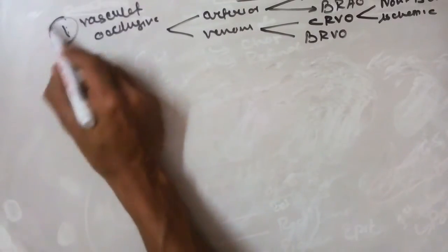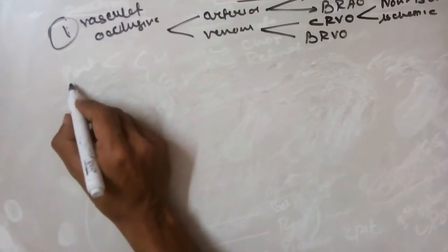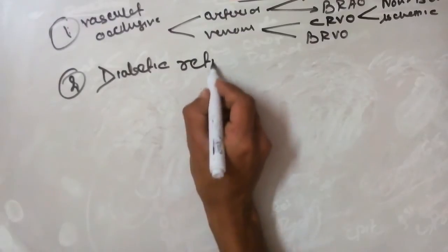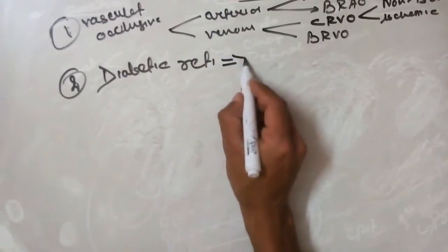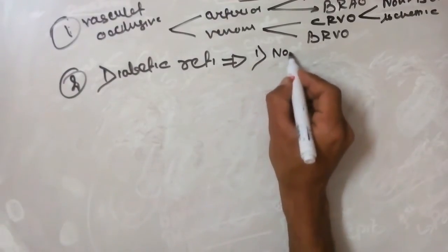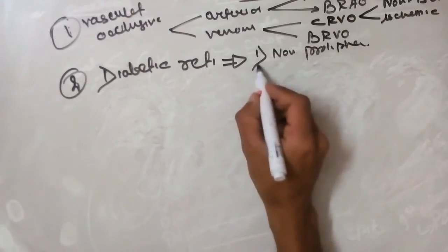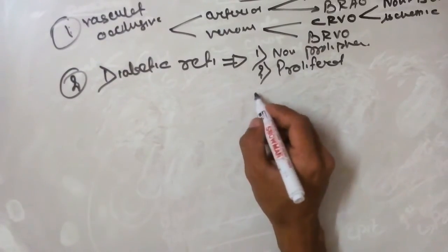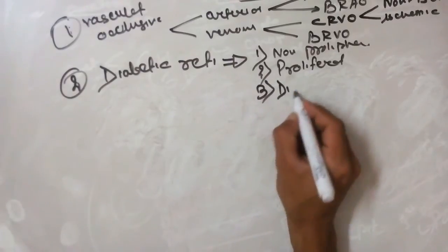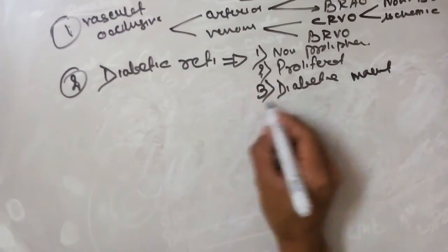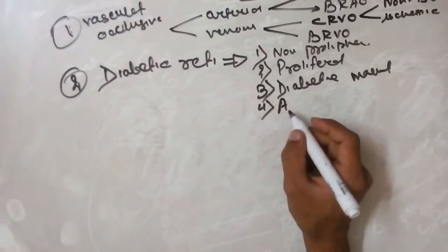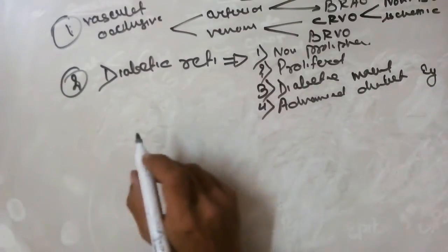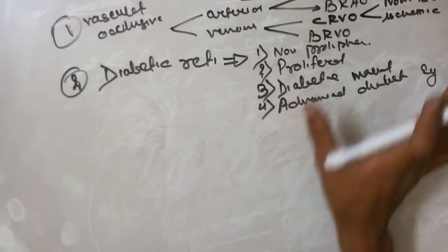Coming to the systemic group, we are going to study diabetic retinopathy, which is again divided into four types: first is non-proliferative type, meaning no neovascularization has yet started; then comes diabetic maculopathy; and ultimately the fourth stage is Advanced Diabetic Eye Disease. We are introducing all diseases along with their types and classification.